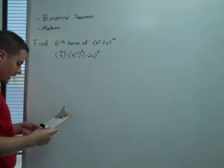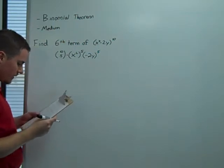Okay, let's clean all this up. 10 choose 5 is 252.